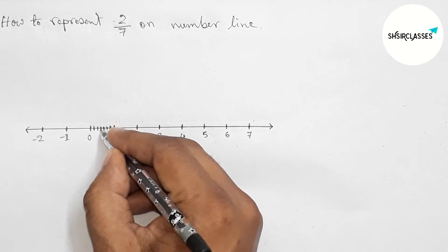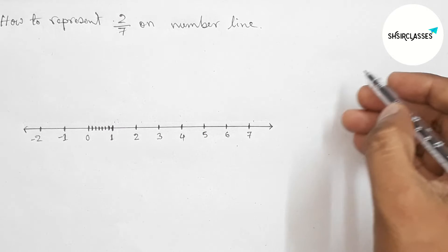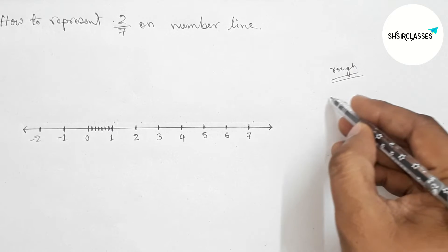By this way, you have to first divide the length between 0 to 1 into 7 equal parts.